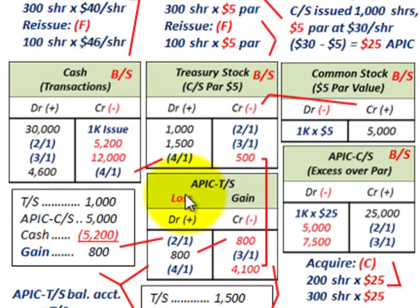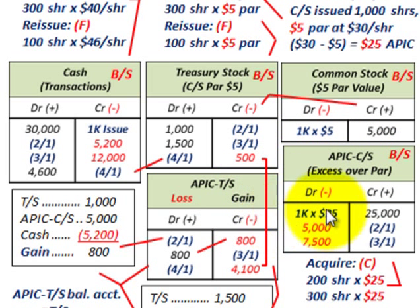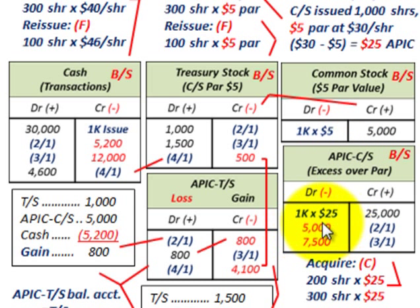Additional paid-in capital is a balancing account — not only between our treasury stock cost account and cash account, but also the additional paid-in capital for our common stock. Proceeding with date 2-1, we would reduce our additional paid-in capital for common stock by $5,000 — the 200 shares acquired times that $25 per share sitting in our common stock. So we would debit that for $5,000. We now have a debit of $1,000 in treasury stock, and a credit of $5,200 for our cash payment.